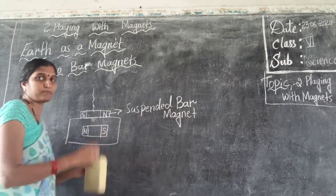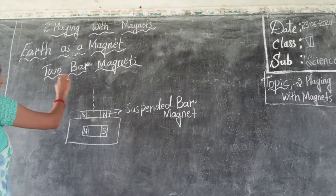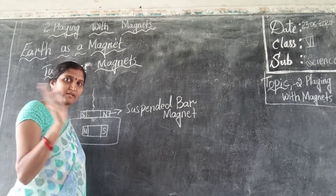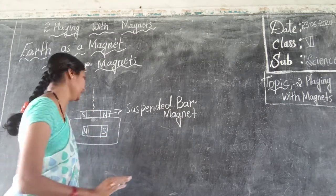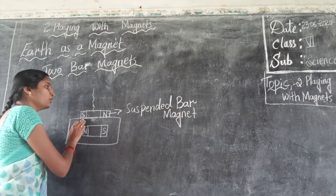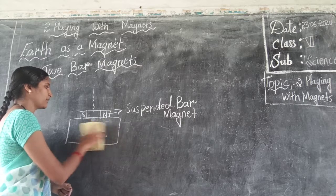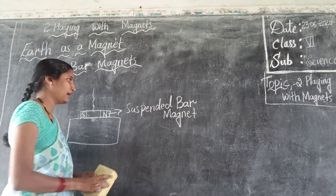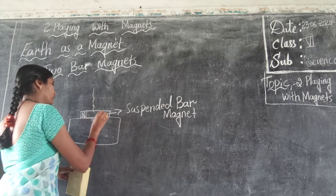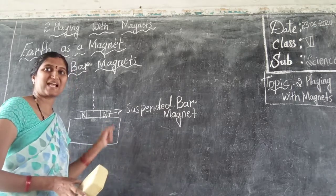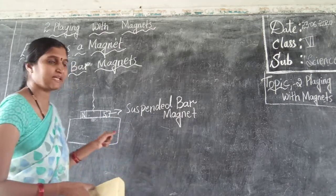That force comes from the Earth. By this, we can come to know that the Earth acts as a magnet. Some magnetic force is present in the Earth, and because of that force, the suspended bar magnet changes its position from north to south and south to north. When you remove the bar magnet from the table, the suspended bar magnet again changes its position back to north and south. So, that force comes from the Earth — and by this we can say the Earth acts as a magnet.